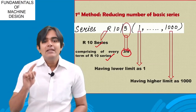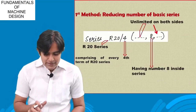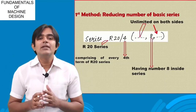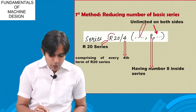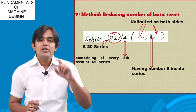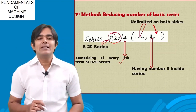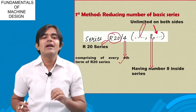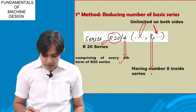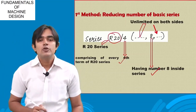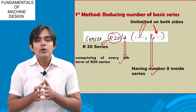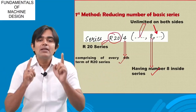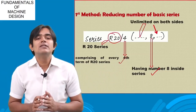Another example: using R20, I take every fourth number of the R20 series — not the full series, but just every fourth number, with the condition that the number 8 must be included. This way the series is reduced. I don't want parts manufactured in a large amount; I want a smaller amount of standardized parts. So I go for the decreased series of numbers.